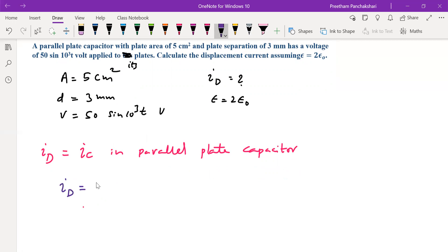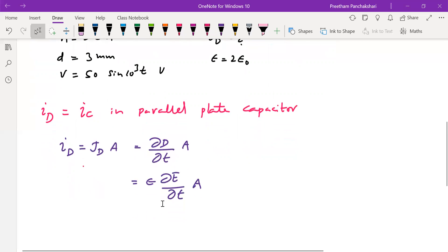For example, if you want I_D, which can be taken as J_D into area, the displacement current density into area. Displacement current density is given by dD/dt into area. And we know that D is epsilon times the electric field E. So we have this relation.